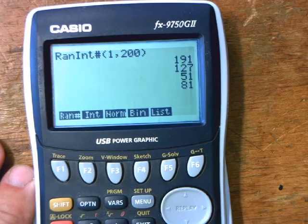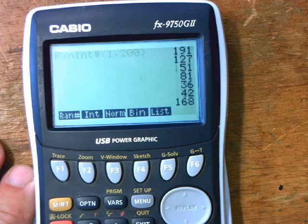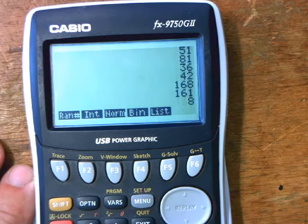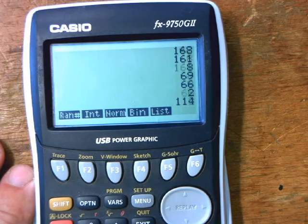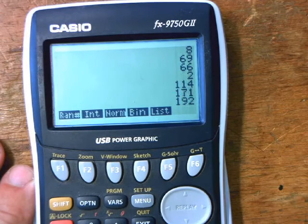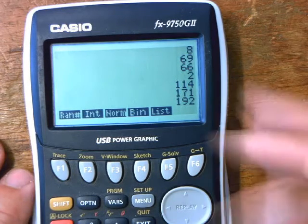Then just keep pressing it and you can see what it's giving me is a random number between 1 and 200. No decimals, no nothing, just nice and easy.